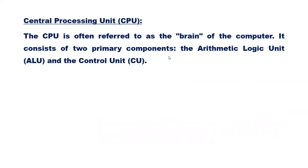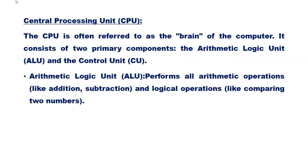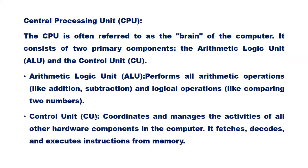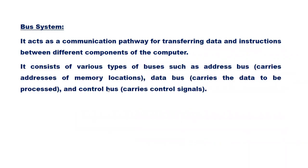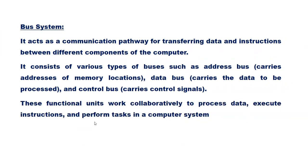The CPU is the brain of the computer, consisting of the arithmetic logic unit and the control unit. The ALU performs all arithmetic and logical operations. The control unit coordinates and manages all other hardware components, fetching, decoding, and executing instructions from memory. The bus system acts as a communication pathway for transferring data and instructions between components, comprising the address bus (carrying memory location addresses), the data bus (carrying data to be processed), and the control bus (carrying control signals). These functional units work collaboratively to process data, execute instructions, and perform tasks.